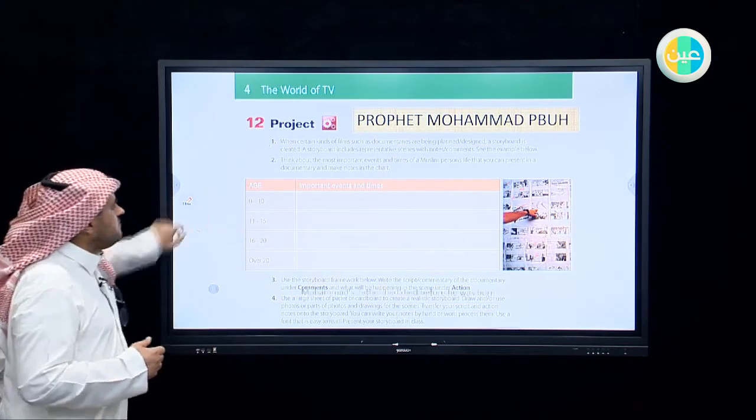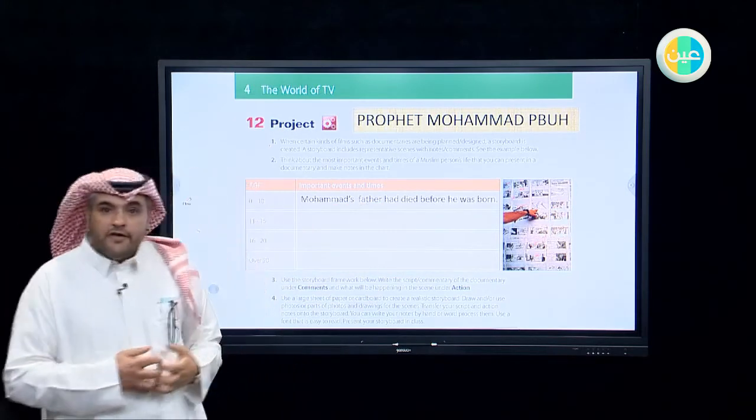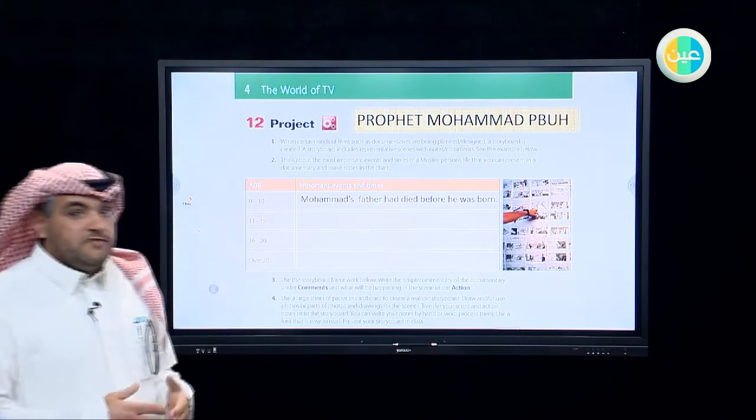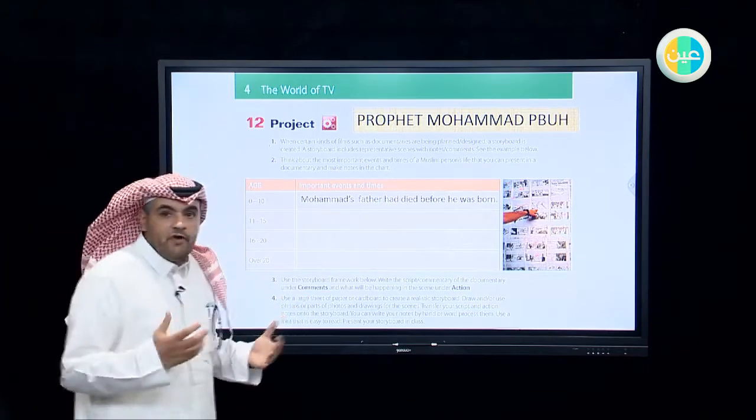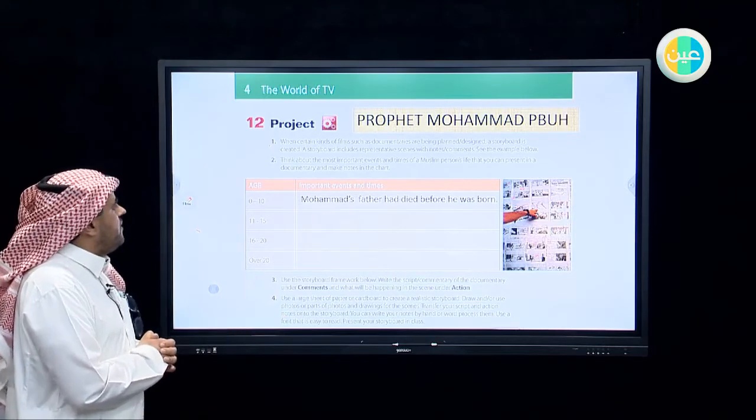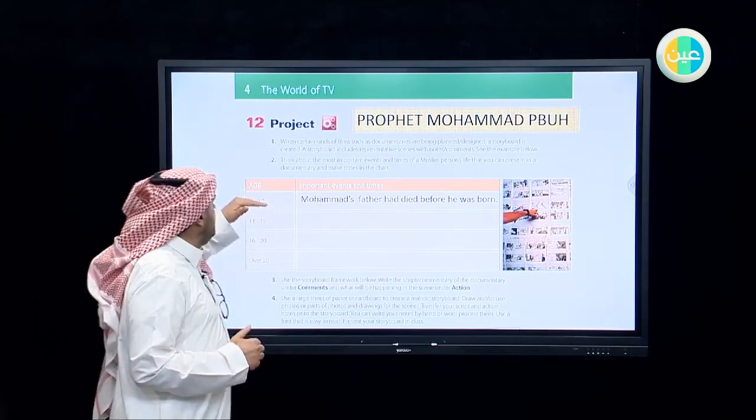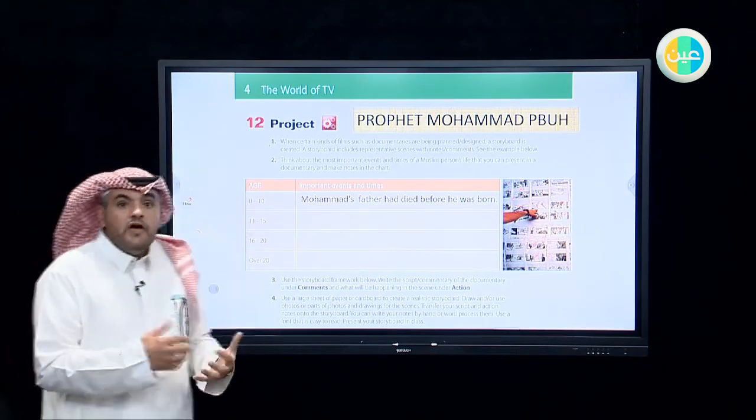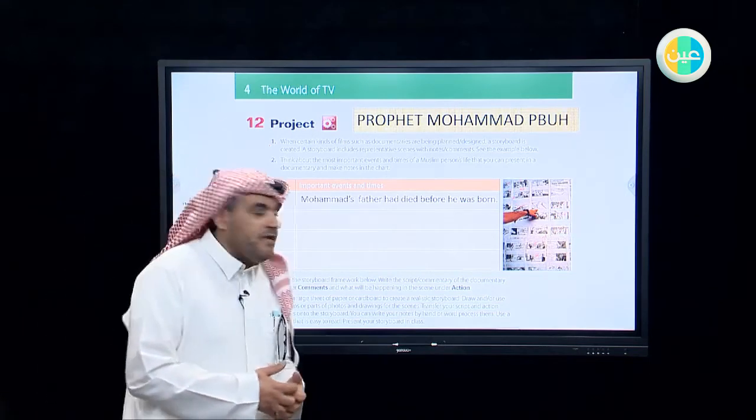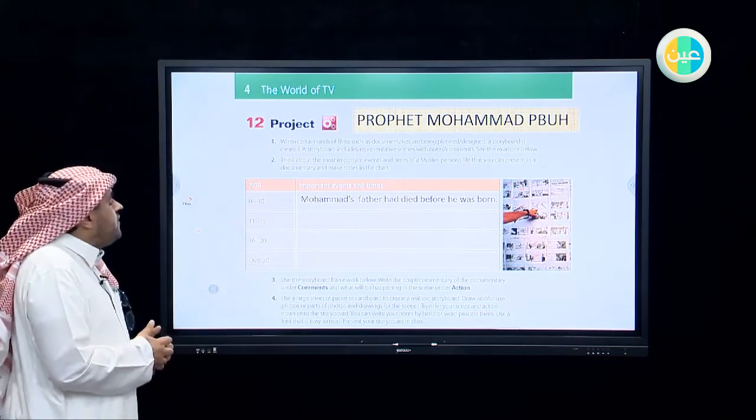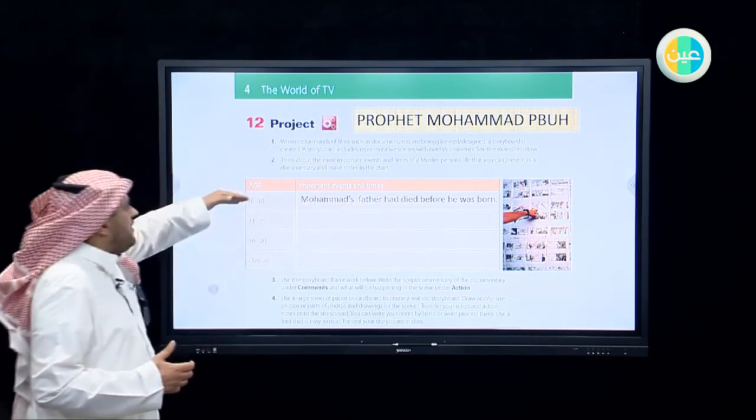What is the most important thing in his life? Just guess and think. Muhammad's father had died before he was born. Yes, when he was born his father had died already. So this is very important event. So he was an orphan. Muhammad Sallallahu Alaihi Wasallam, Muhammad peace be upon him, was an orphan. Also, we can add the death of his mother Amina bint Wahab when he was 6.